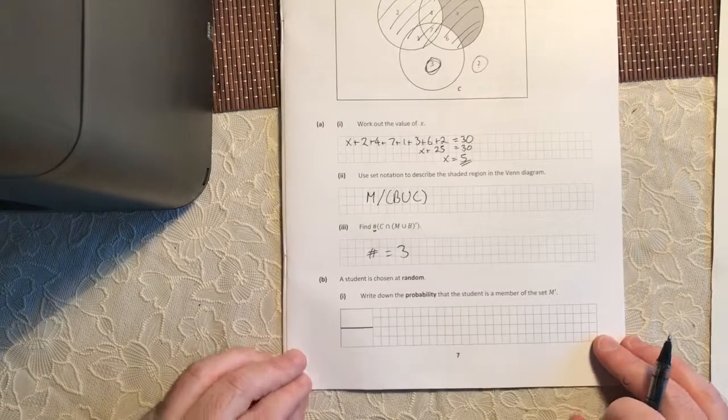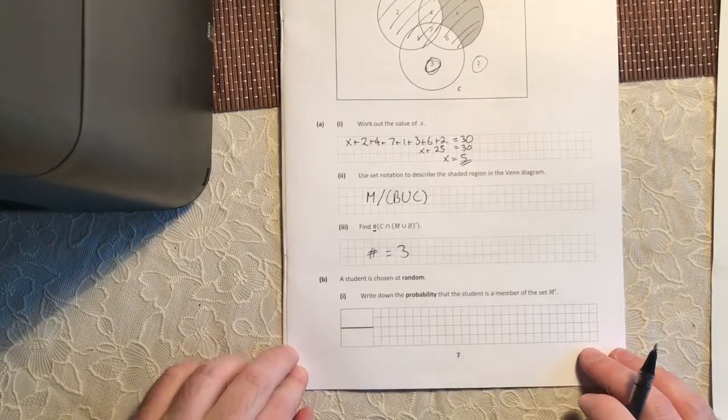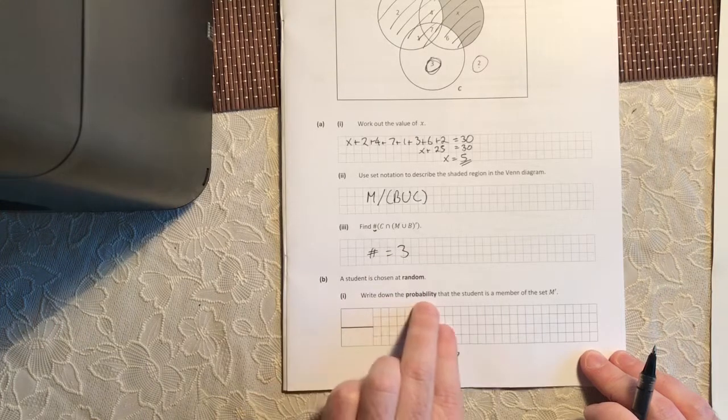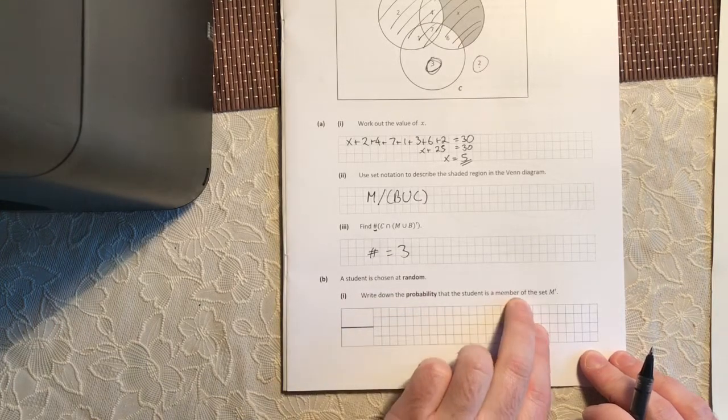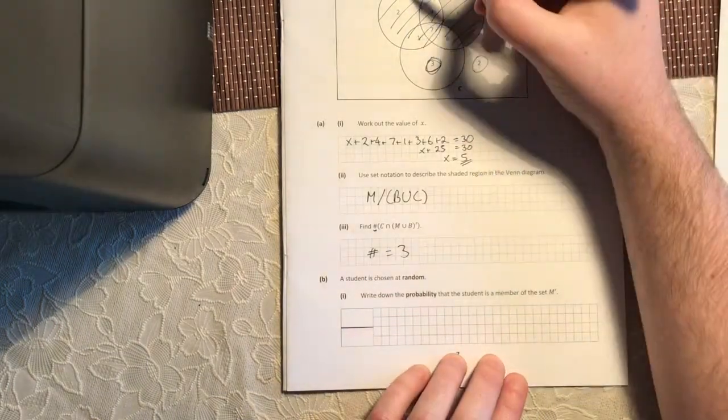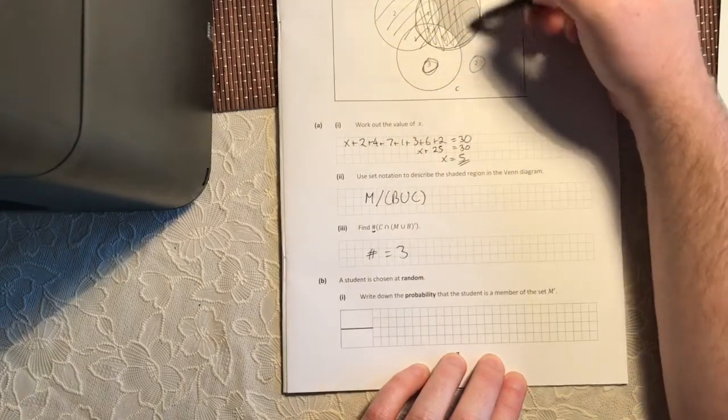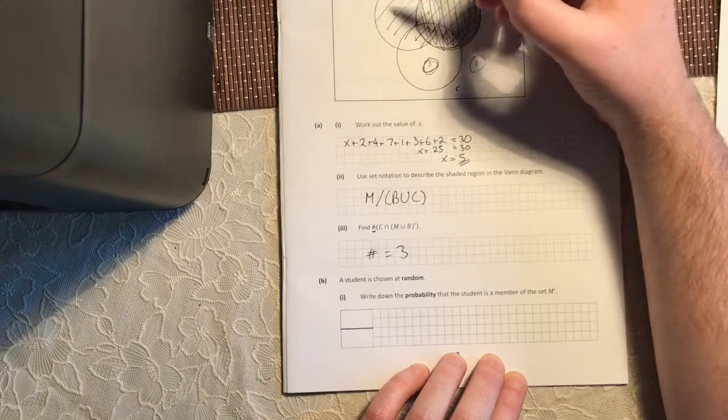Part B. A student is chosen at random. Write down the probability that the student is a member of the set M complement. So see this circle here? Not interested. I'm interested in everyone outside of it.